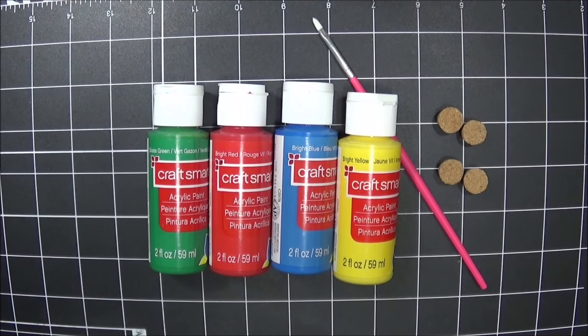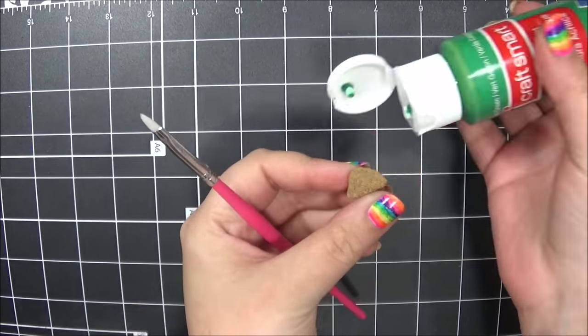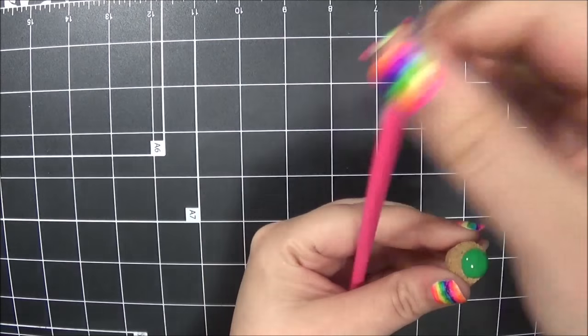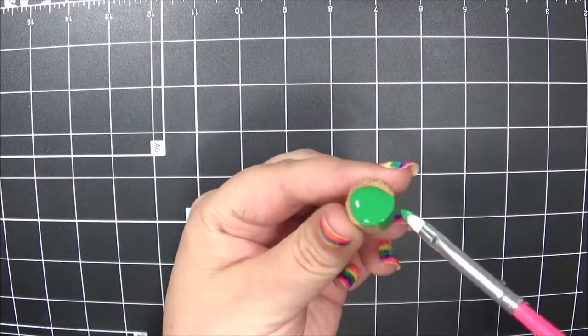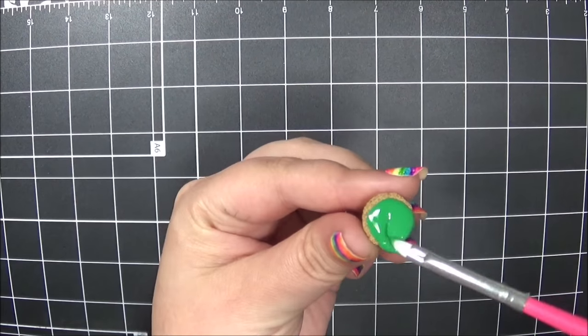So the video was going to end here, but I didn't really like the cork color. So I got green, red, blue, and yellow acrylic paint and painted the corks. Obviously, I chose these colors to match the sand. It's kind of like sand waiting to be dropped into the bottles. I hope that makes sense.